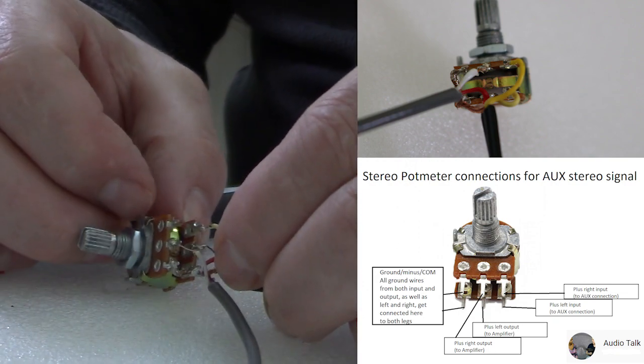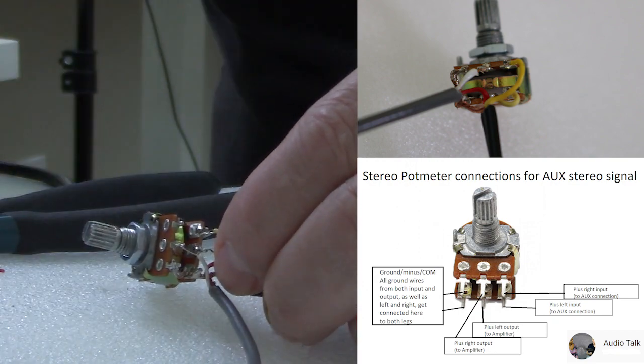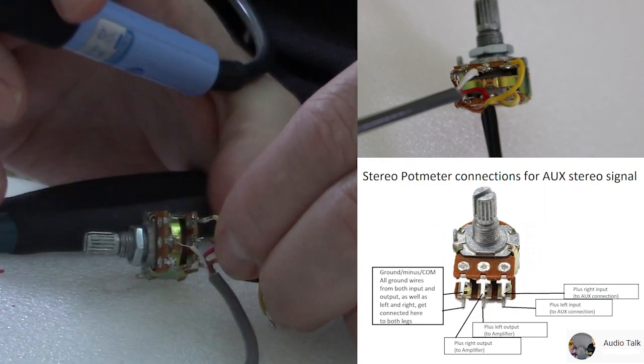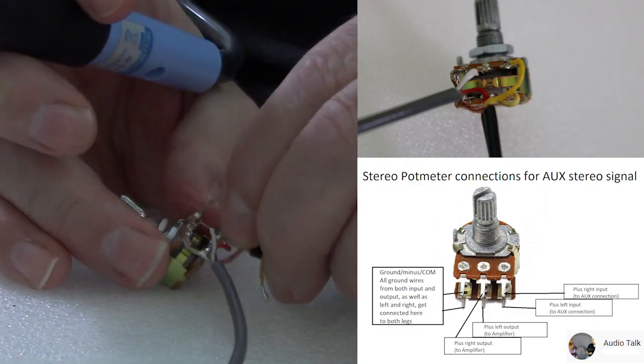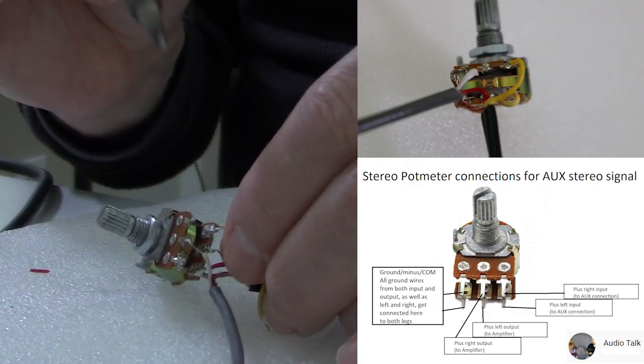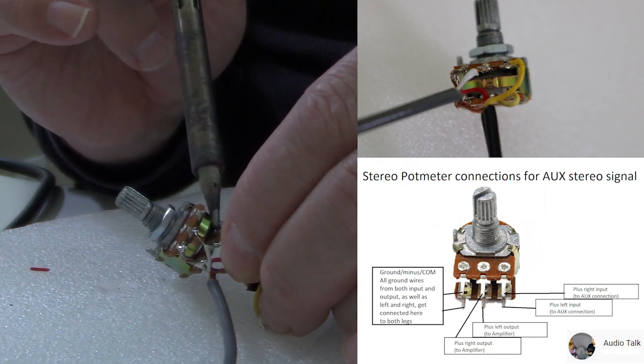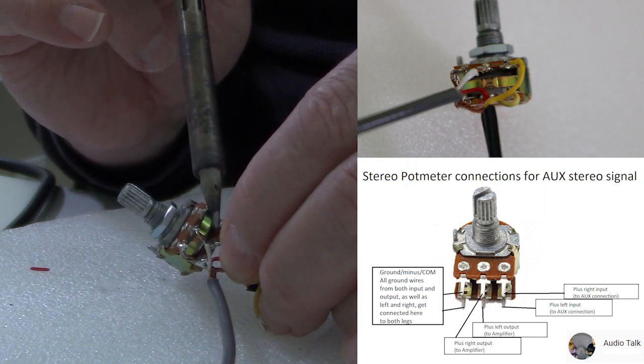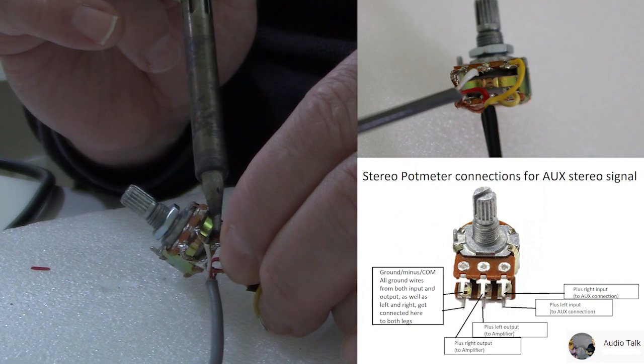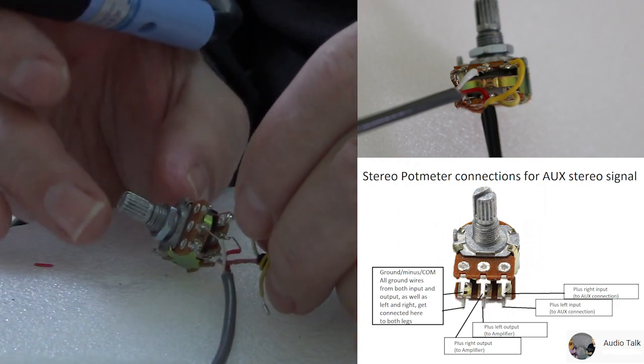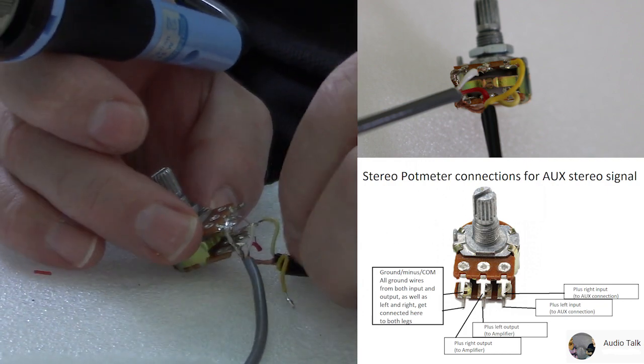In the middle we have our outputs to the amplifier. And then on the very outside you will have the input from the AUX signal coming in. And it can be a little bit of a challenge because the lines get pretty hot.